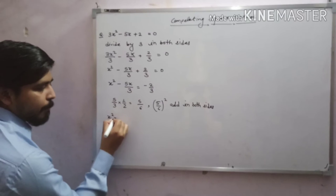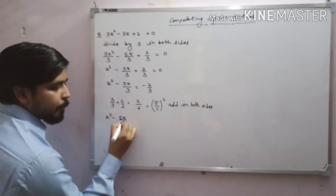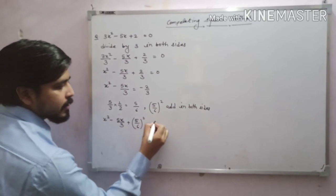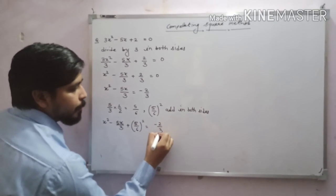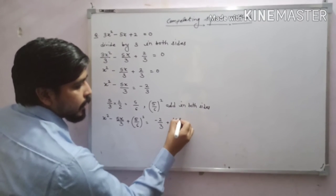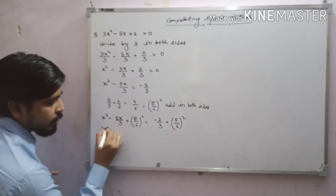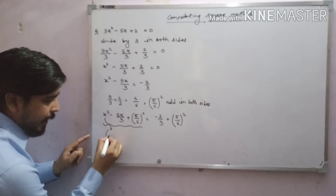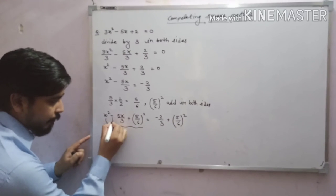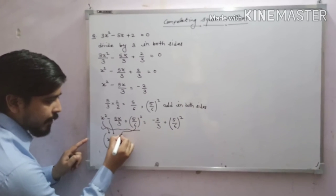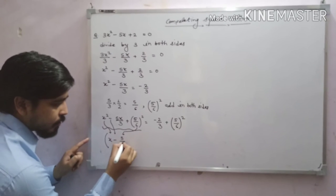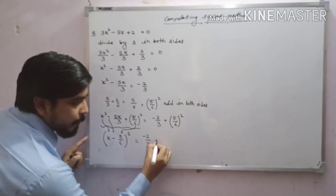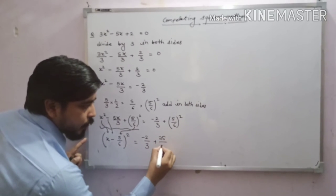Now: x² − 5x/3 + (5/6)² = −2/3 + (5/6)². See that on the left side a perfect square has been formed. We write it as: (x − 5/6)² = −2/3 + 25/36.